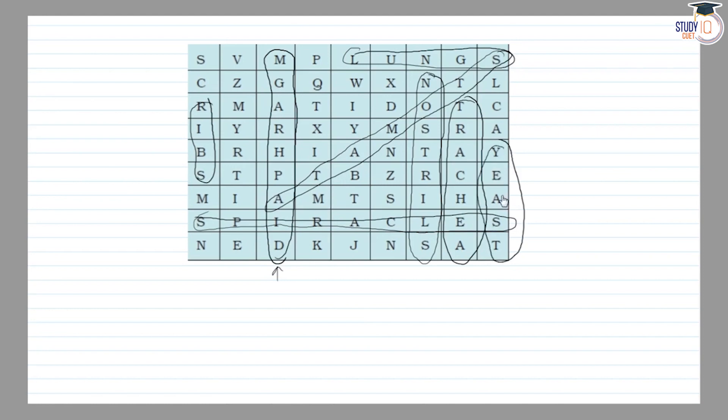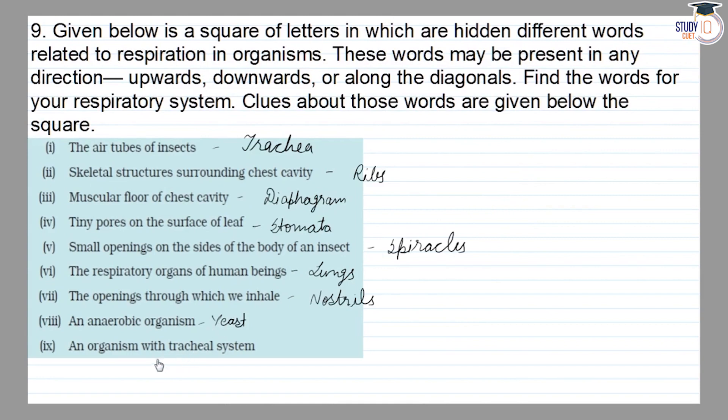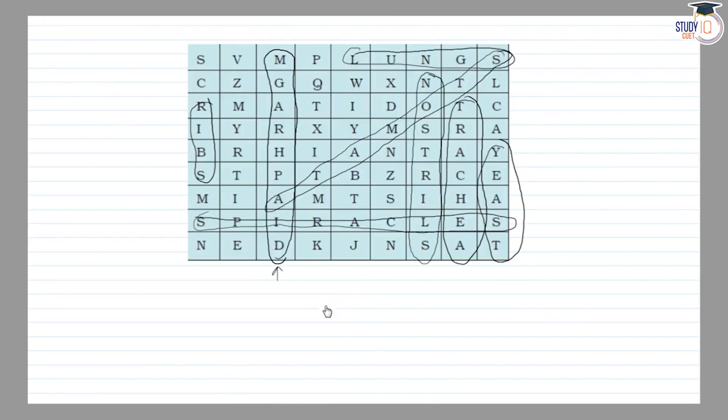The last is an organism with tracheal system. It's ant. And the last one is ant. Where is ant? Let's find out. This is here, ant.